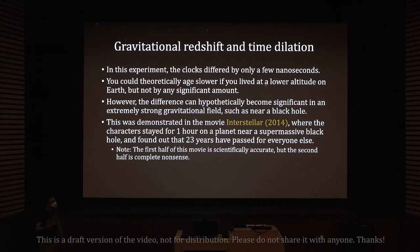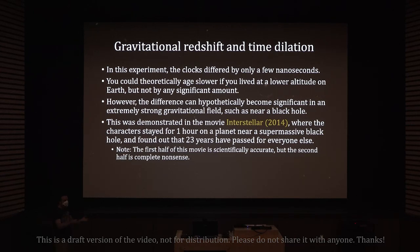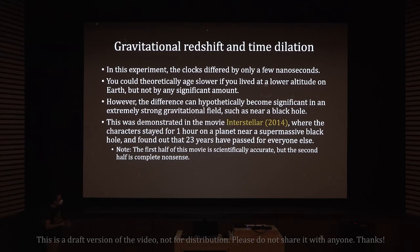This was demonstrated in the movie Interstellar in 2014, where characters stayed for one hour on a planet orbiting a supermassive black hole, and when they came back, 23 years had passed for everyone else — very significant gravitational time dilation due to a very strong gravitational field. Note that the first half of the movie is remarkably scientifically accurate — the black hole looks realistic, gravitational time dilation is realistic. But the second half of the movie is complete nonsense and not scientifically accurate at all.